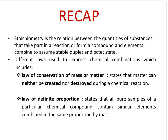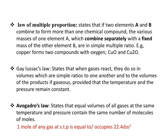With that last example, we come to the end of this section. We started with stoichiometry — the relation between the quantities of substances that take part in a reaction. Different laws include: the law of conservation of mass, which states that matter can neither be created nor destroyed during a chemical reaction; the law of definite proportions, stating all samples of a compound contain similar elements combined in the same proportion by mass; and the law of multiple proportions.